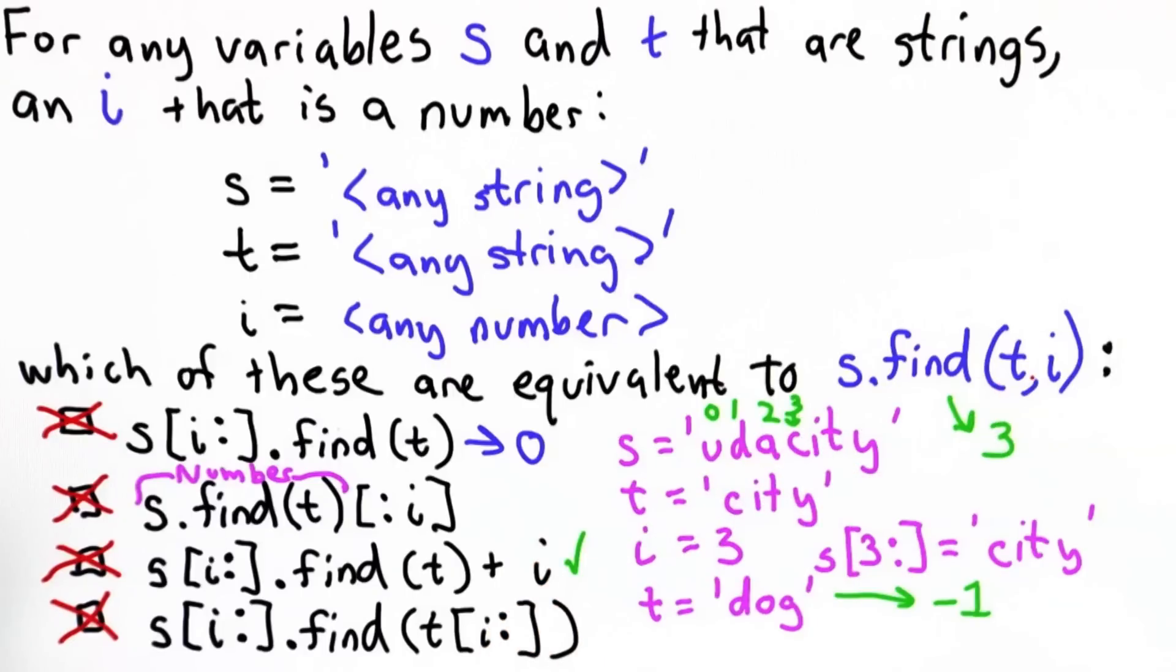So this was kind of a tricky question. I hope you're not upset if you didn't get it right. But the answer is none of these are actually equivalent to s.find(t, i).